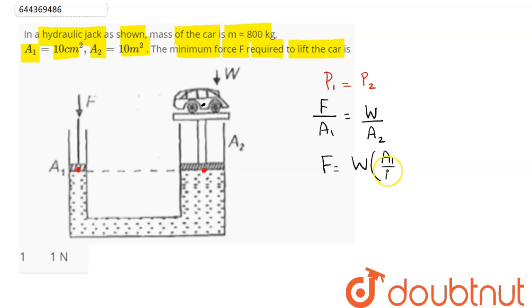So here, this weight of the car will be 800 kg into 10 meter per second square, which is equal to mg. Into A1 here is given as 10 square centimeter, which is 10 into 10 power minus 4, divided by A2 here is 10 square meter.